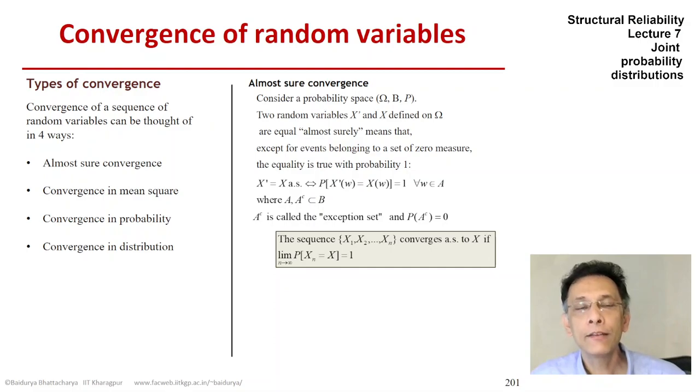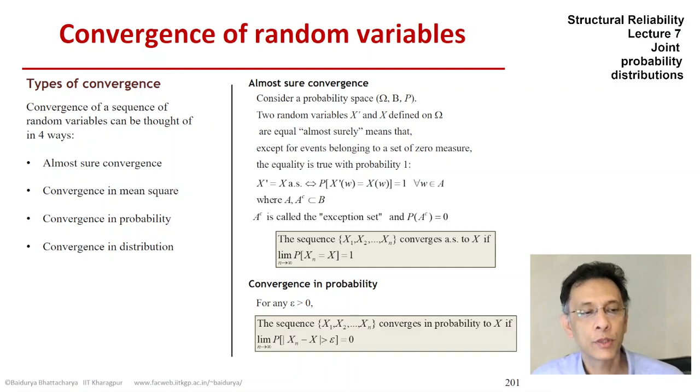Now, that's a very strong statement. If we weaken that statement, we get convergence in probability. So if now we have any positive epsilon, and we define the convergence in terms of a probability in the limit, in terms of Xn minus X, the absolute value greater than epsilon, epsilon being any positive number, then if that probability is zero, then we get convergence in probability. If you compare the two, the almost-sure convergence and convergence in probability, you can see how the requirement has been diluted in the convergence in probability case.